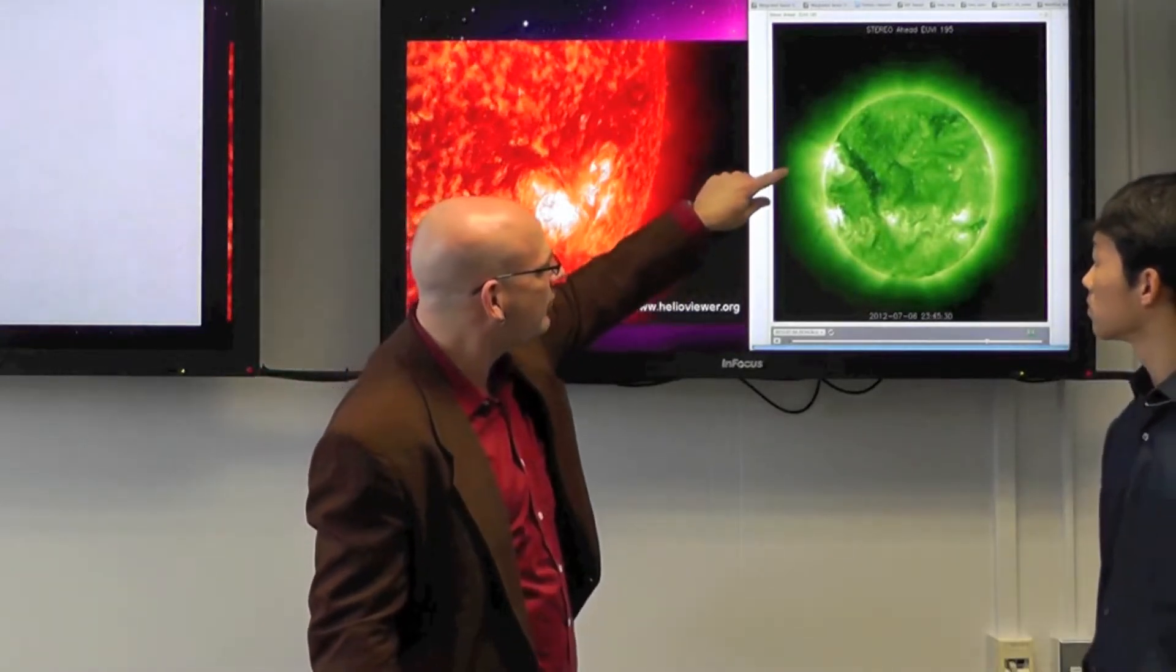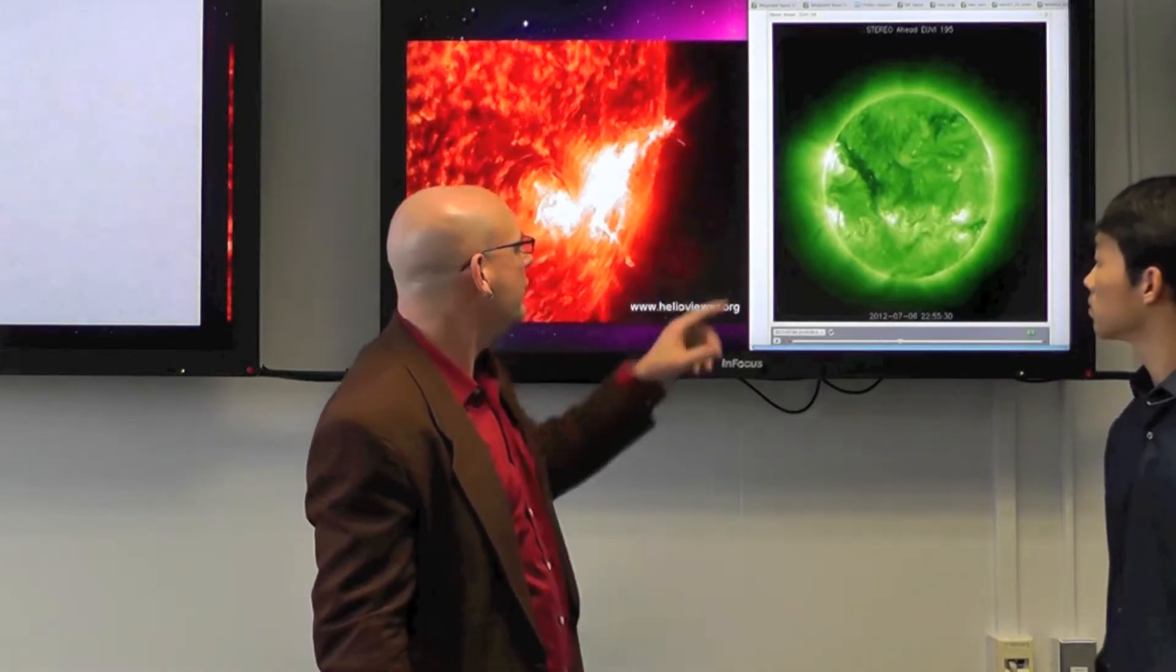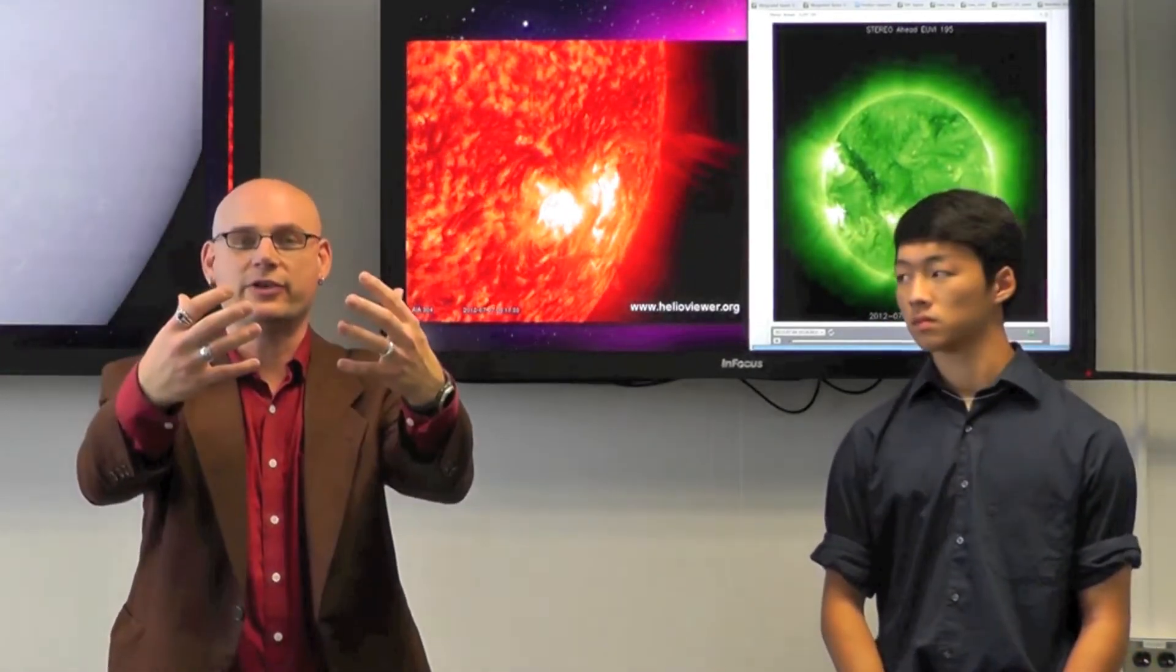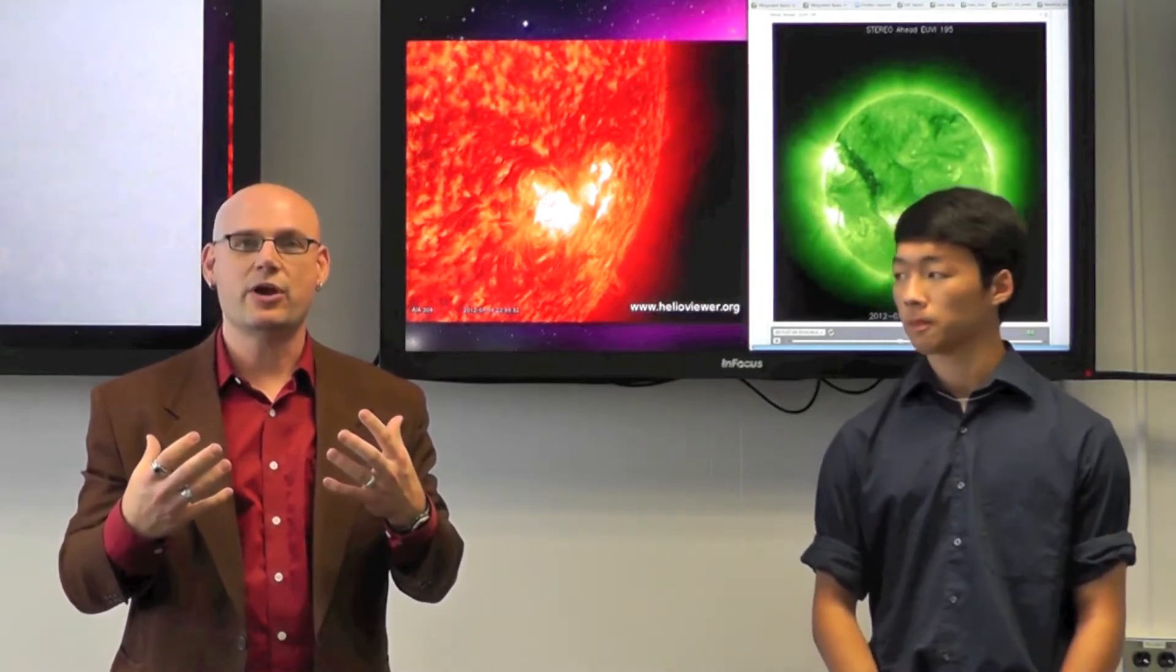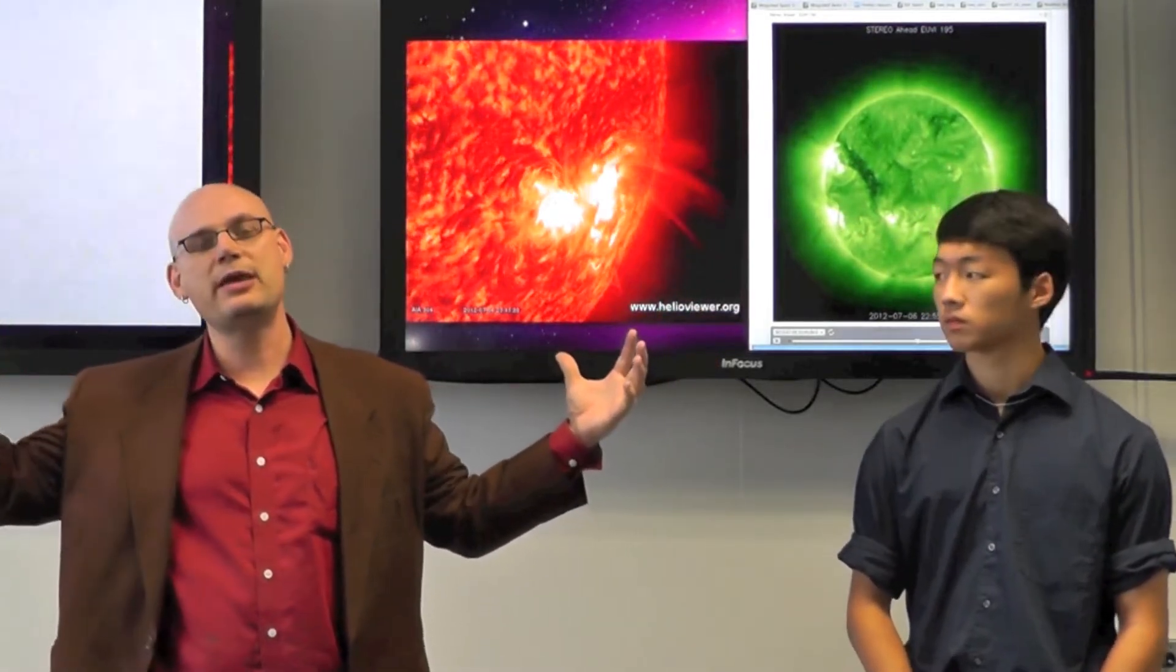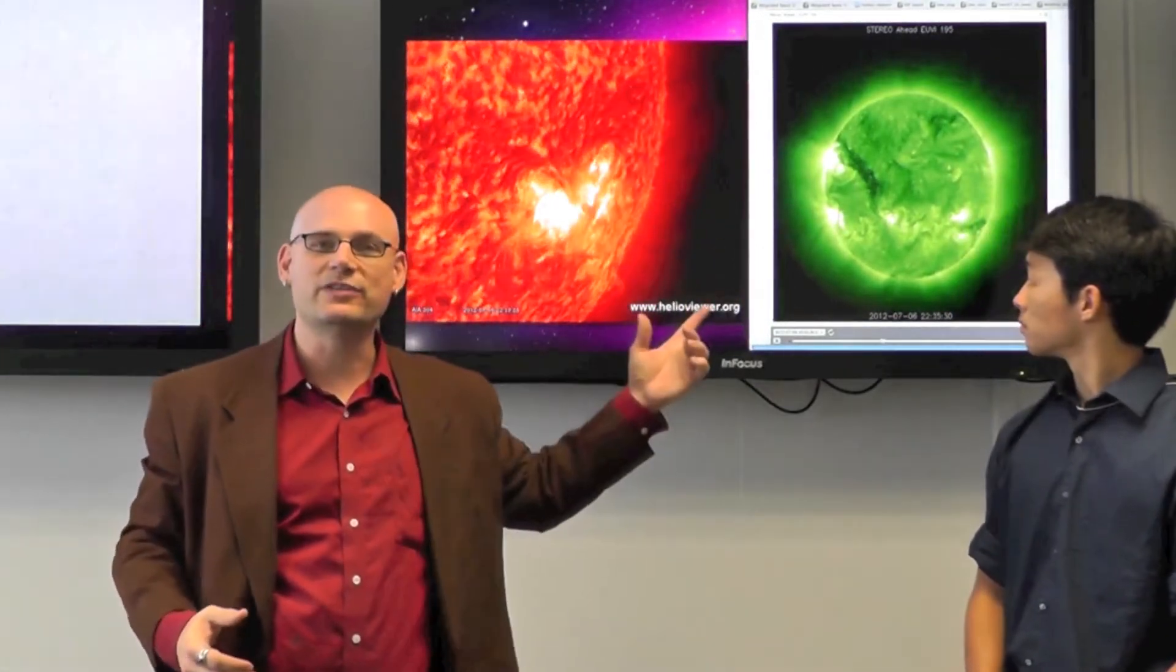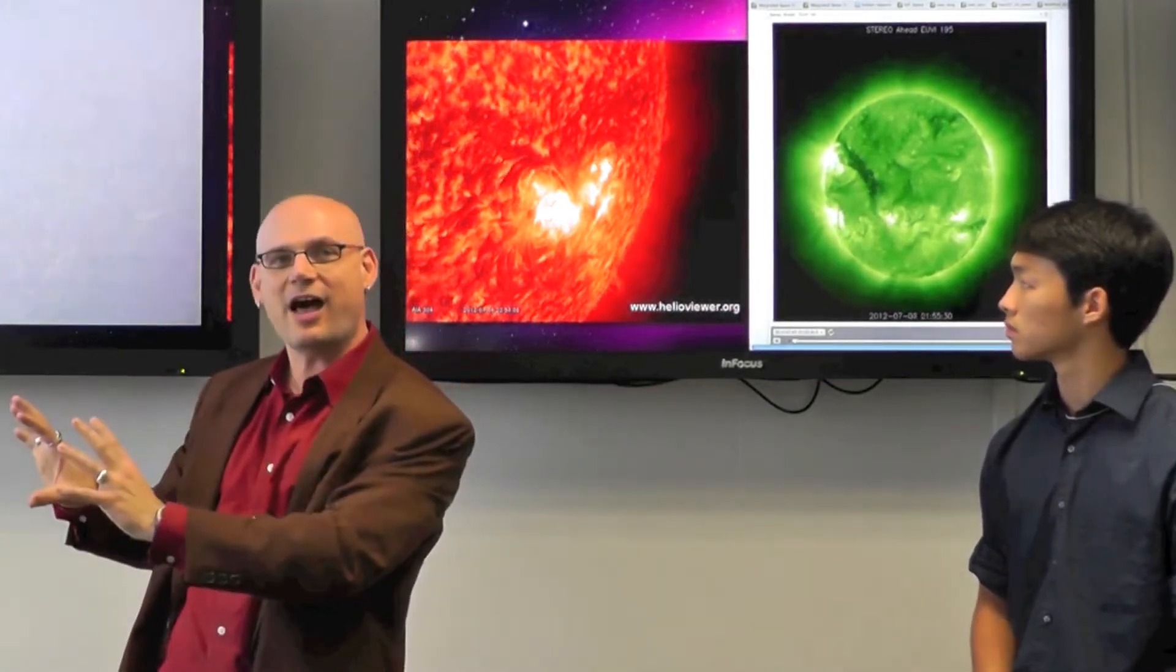And here's another example of extreme ultraviolet, but this is from the STEREO spacecraft. So what's going on here is normally when we look at the Sun with SDO, we're looking straight onto the Sun, but we also have two spacecraft called STEREO—STEREO A and STEREO B. The STEREO A spacecraft is ahead of the Earth's orbit on one side of the Sun; STEREO B is behind the Earth's orbit on the other side of the Sun. In this case, we're looking at this with a STEREO A spacecraft, so we're seeing the flare also from the side, not just from the front.